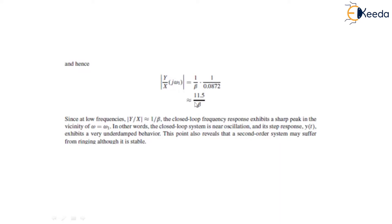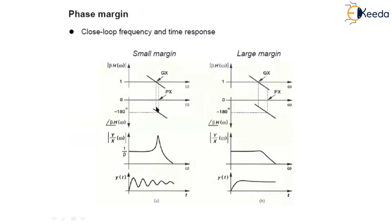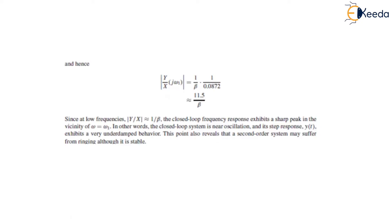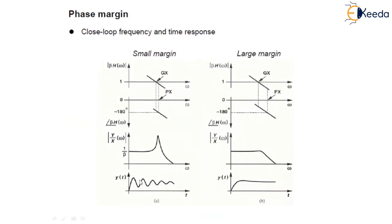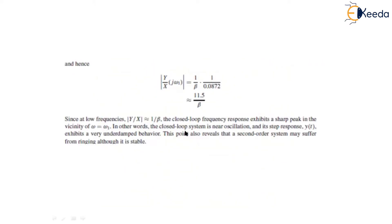At lower frequencies, the magnitude of the closed loop transfer function equals 1/β, which is inversely proportional to the feedback factor β. This closed loop frequency response exhibits a sharp peak in the vicinity of ω equals ω₁, as already seen in the diagram. In other words, the closed loop system is near oscillation in this marginal case, and its step response exhibits very underdamped behavior, as revealed by the time domain response.